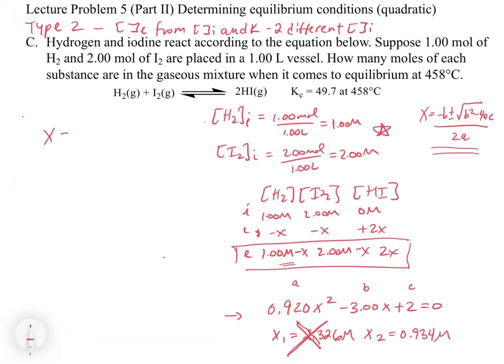Okay, so now that we have our root of choice, we decided that x is going to be equal to 0.934 molar, we have to go in and we have to solve for the concentration. So our concentration of H2 is going to equal 1.00 molar minus 0.934 molar. And so that is going to give us a solution of, let me just look it up on my piece of paper here, 0.066 molar.